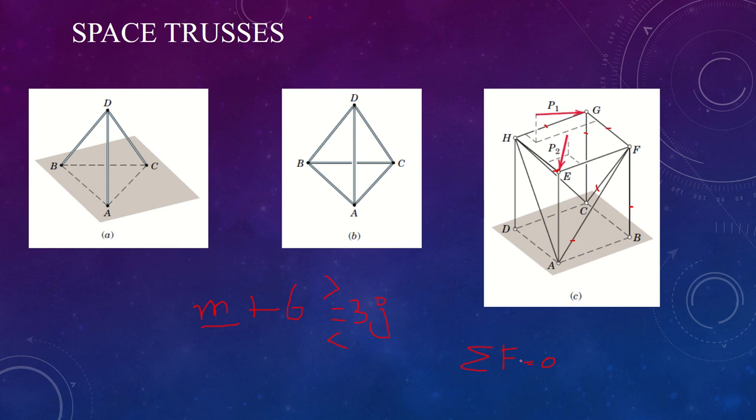A joint on which not more than three unknown forces act may then be analyzed in turn, step by step. The joint technique tends to minimize the number of simultaneous equations to solve when we must determine the forces in all members of the space truss. For this reason, this approach is more friendly and much more recommended compared to the method of sections.